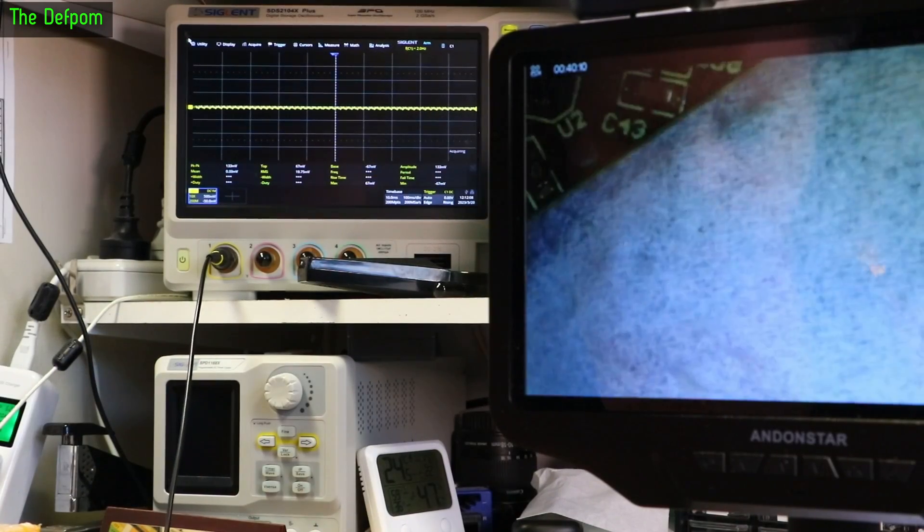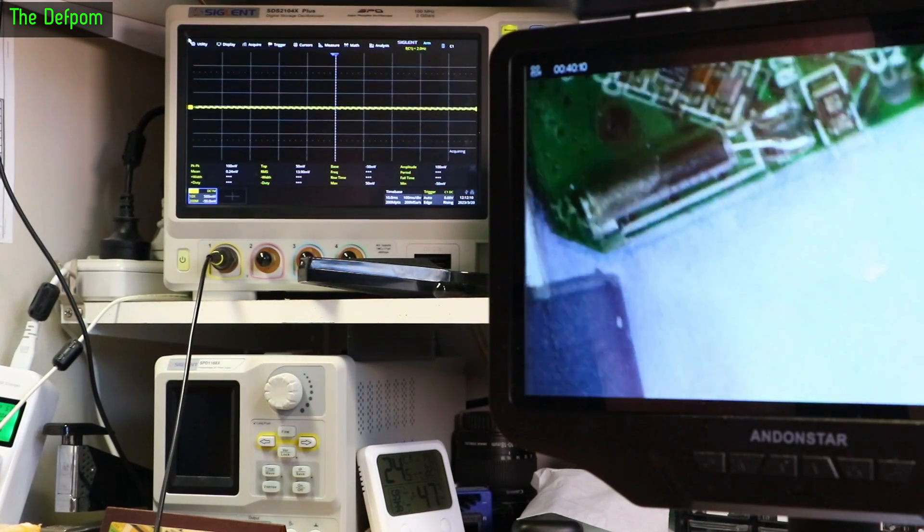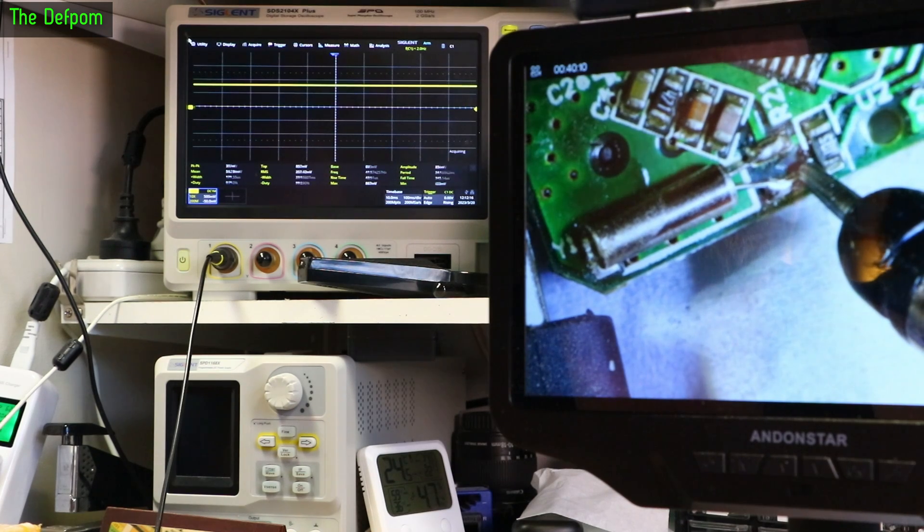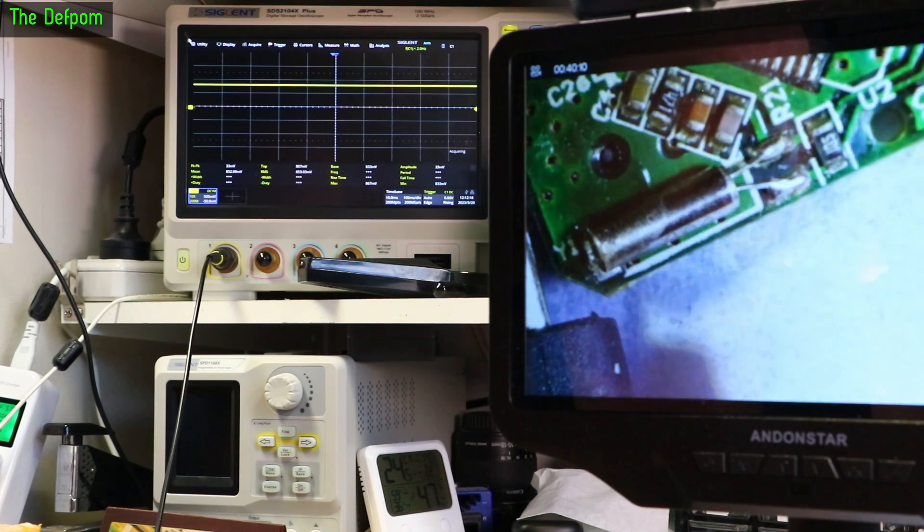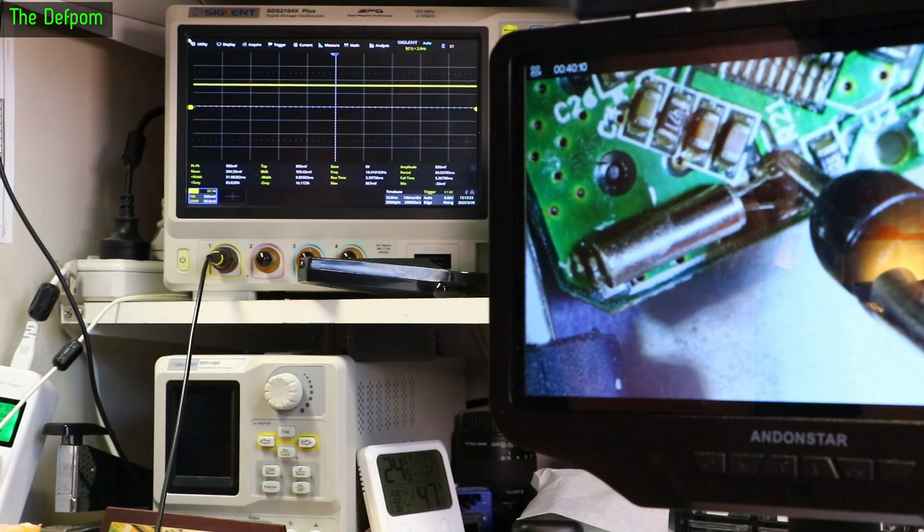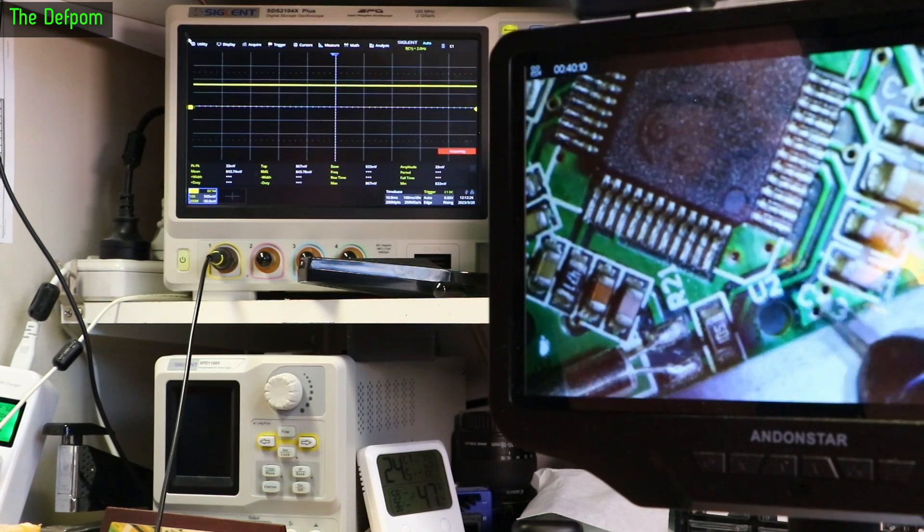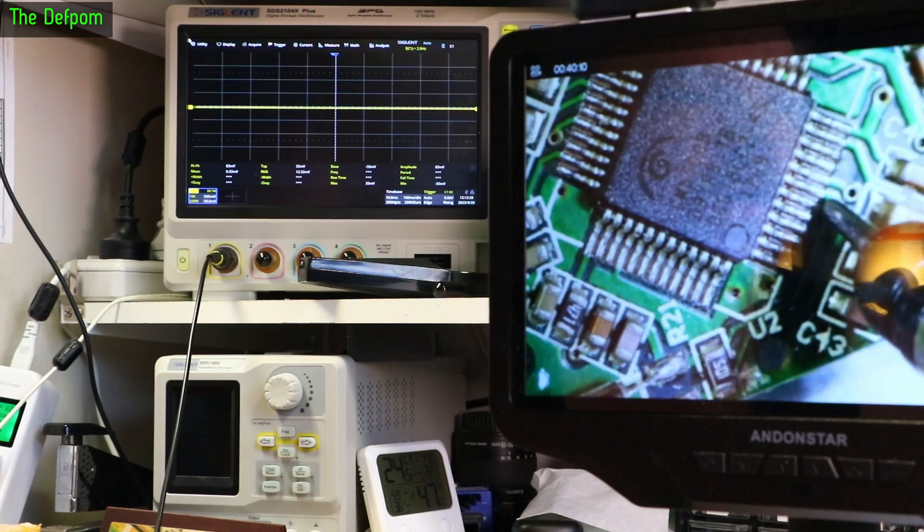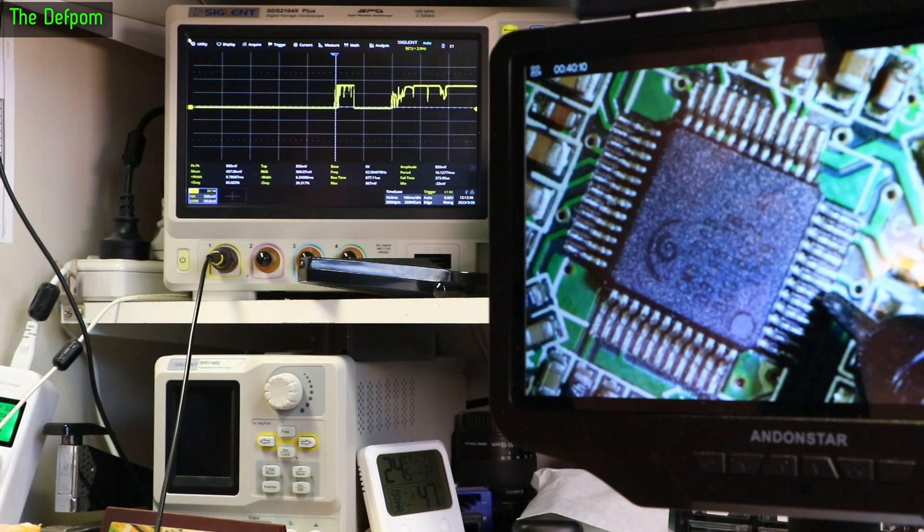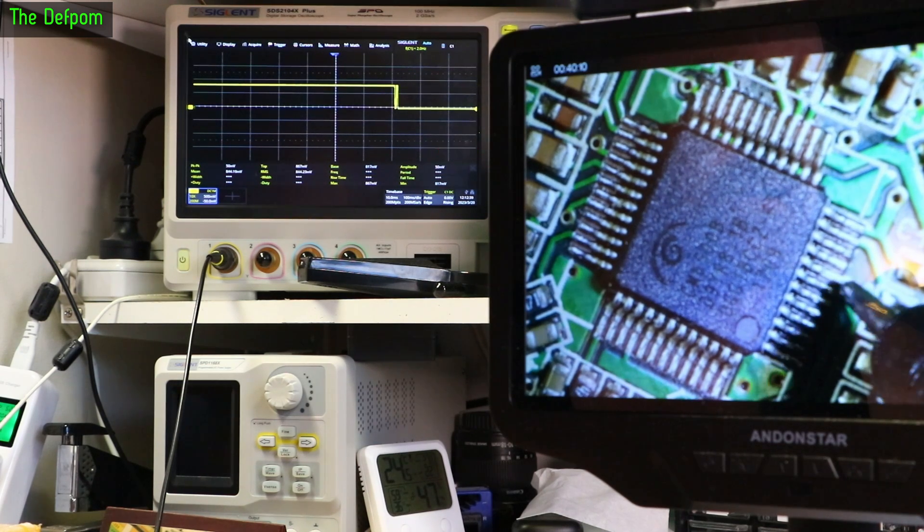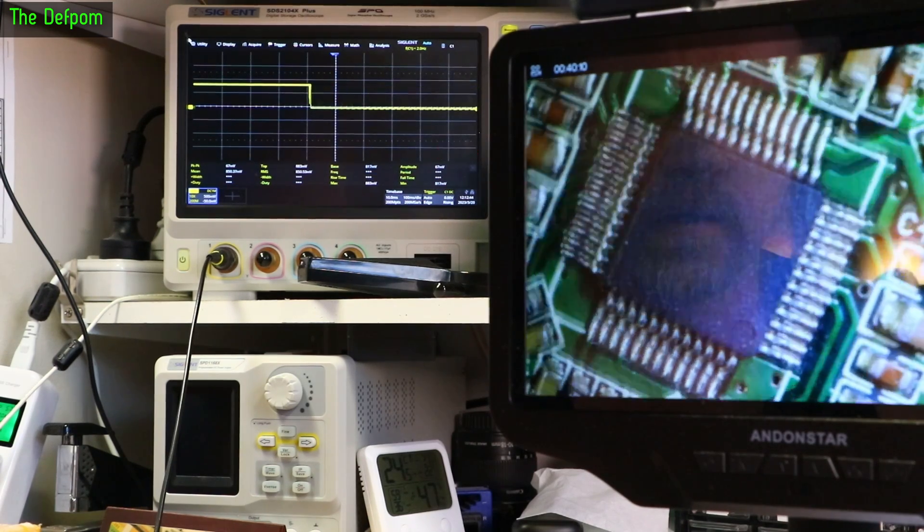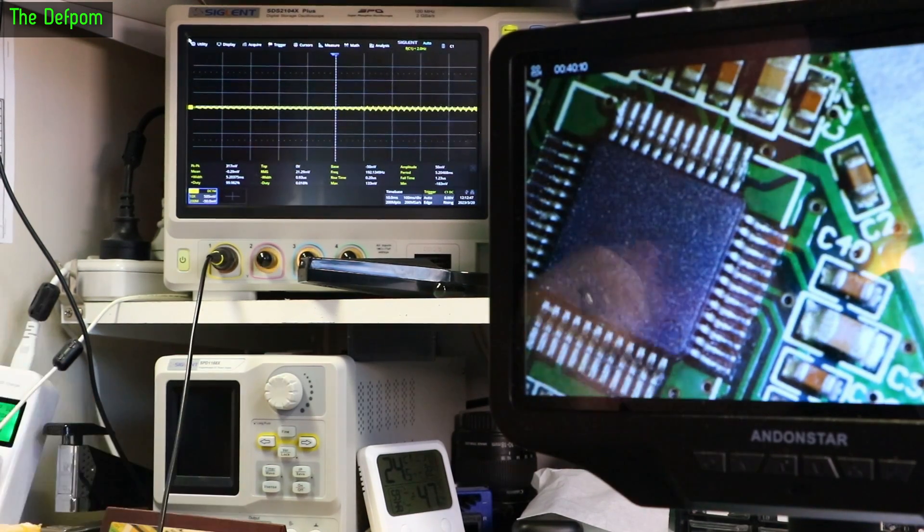Let's probe the crystal, see if we've got anything going on here. Try and get both things on screen at once. That's just high. Check the other side. That's just high as well. Seems like there's no oscillation happening. Let's follow the lines down and come over here. Carefully probe. Nothing there. Interesting. No oscillation from the crystal.